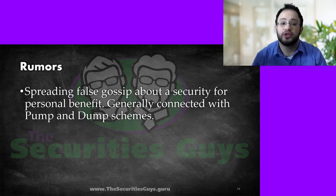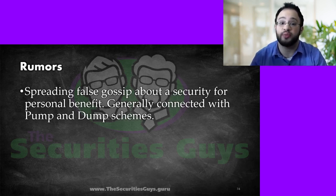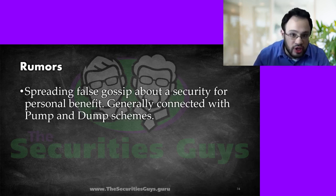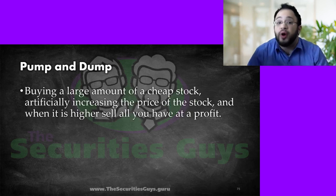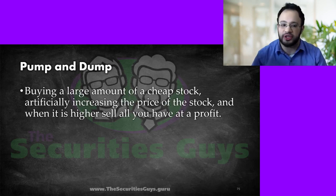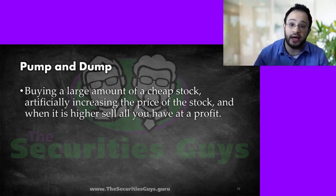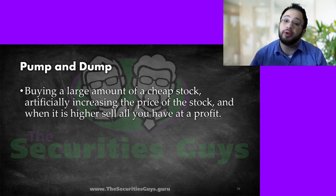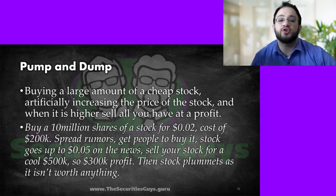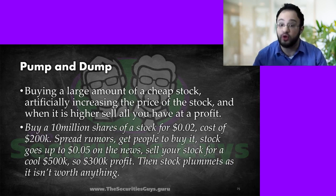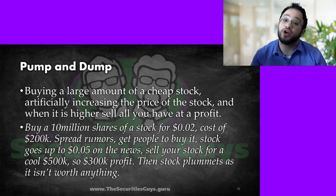Rumors — spreading false gossip, untrue things about a security for personal benefit. Generally we're going to talk about these with pump and dump schemes. Pump and dump schemes involve buying a large amount of some cheap stock, then artificially increasing the price, usually through rumors and other lies, to get people to buy it. When people are buying it, the price goes up. Once the price goes up, you sell what you have for a profit. For example, I buy 10 million shares of stock at two cents a share — that costs $20,000.